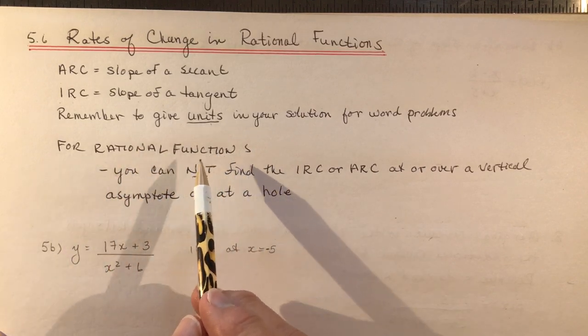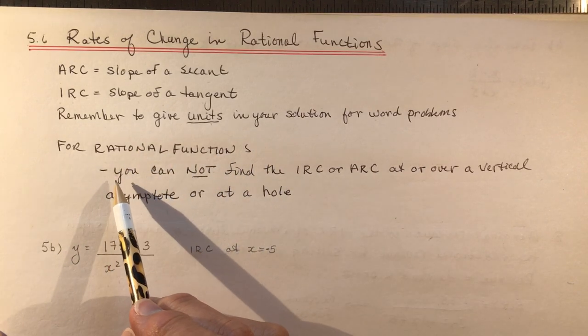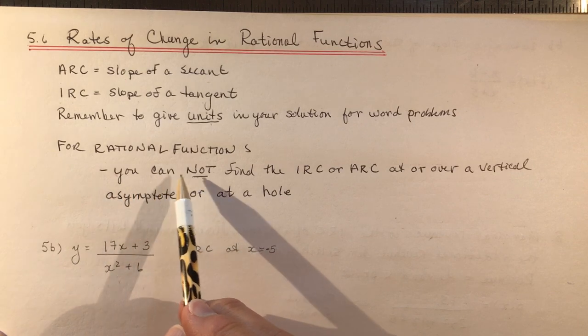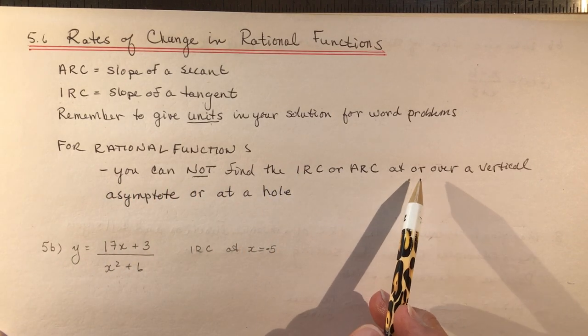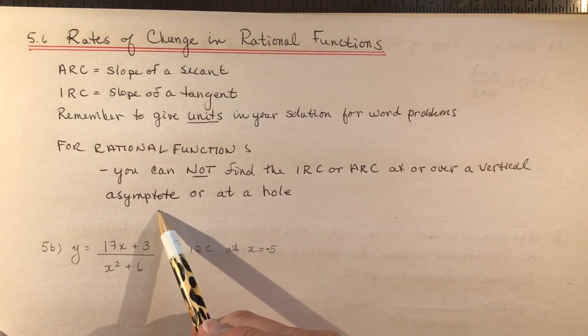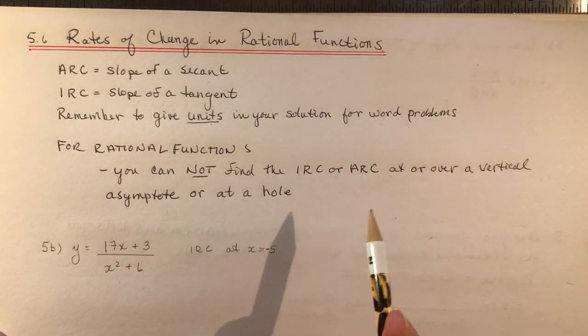For Rational Functions, the only specific difference here is that you cannot find the IRC or ARC at or over a vertical asymptote or at a hole. Okay, that makes sense.